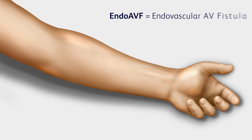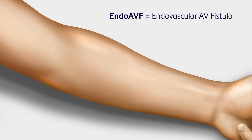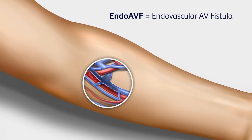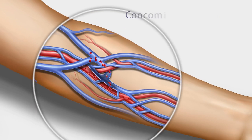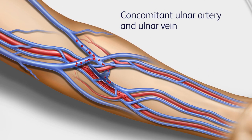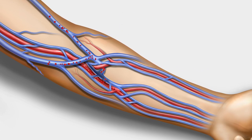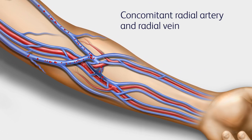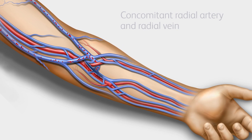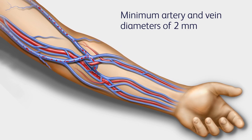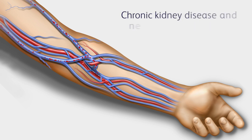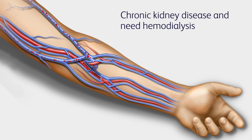The Wavelink Endo-AVF System is indicated for the creation of an arteriovenous fistula, or AVF, using concomitant ulnar artery and ulnar vein or concomitant radial artery and radial vein in patients with minimum artery and vein diameters of 2 millimeters at the fistula creation site who have chronic kidney disease and need hemodialysis.